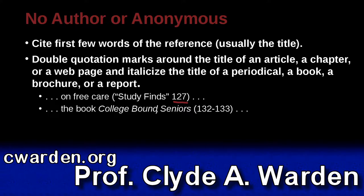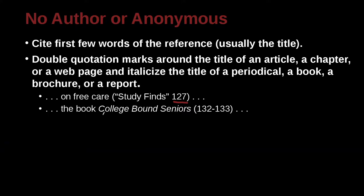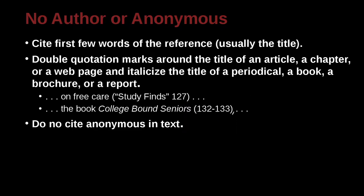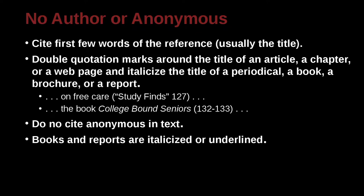The book 'College Bound Seniors' — here we have a book, so the book uses italics, that is writing at an angle. The pages we're looking at are 132 to 133. Try not to cite anonymous using the word anonymous. That's different in APA, but in MLA it's discouraged to use the word anonymous. Books and reports are italicized or underlined, as we just said.